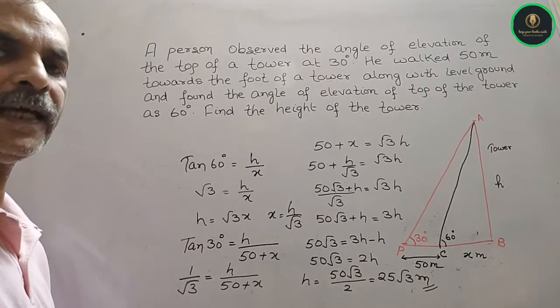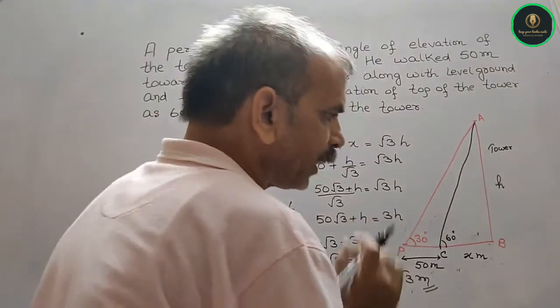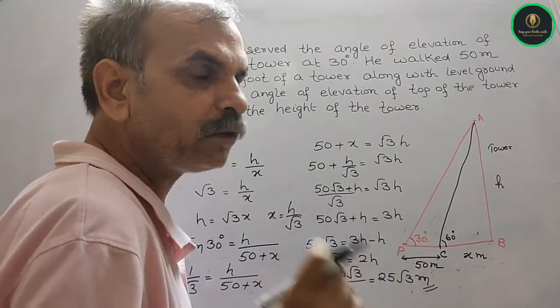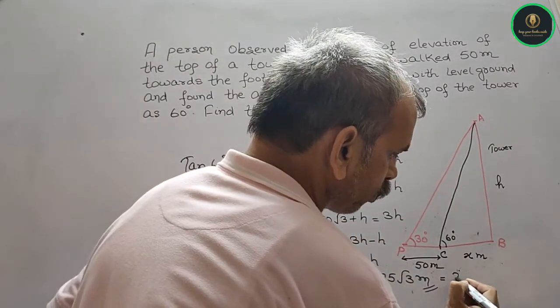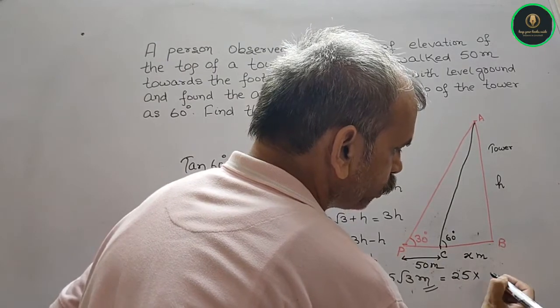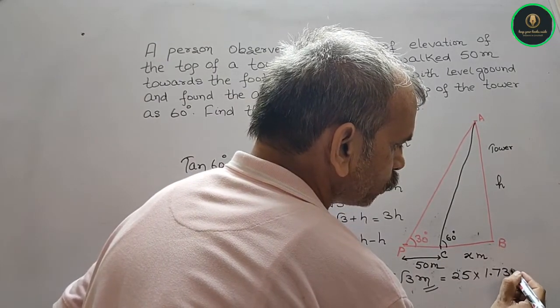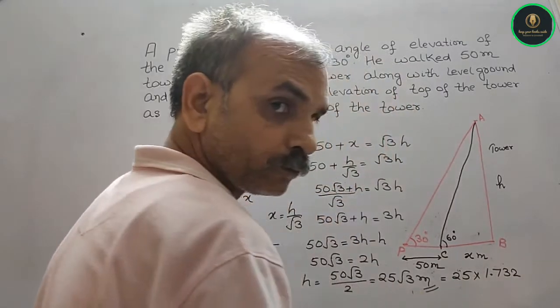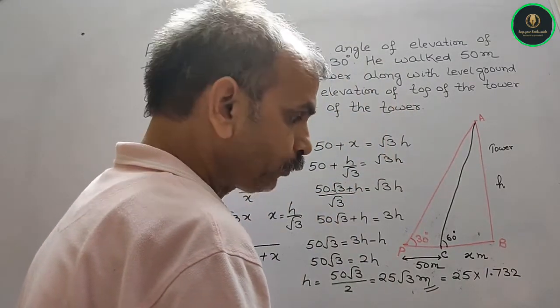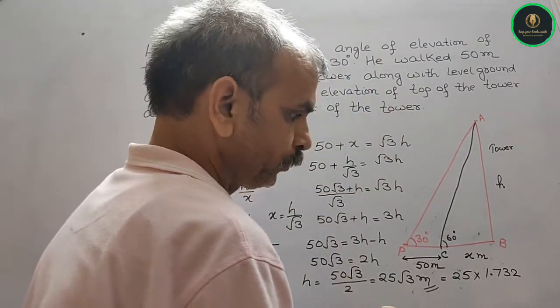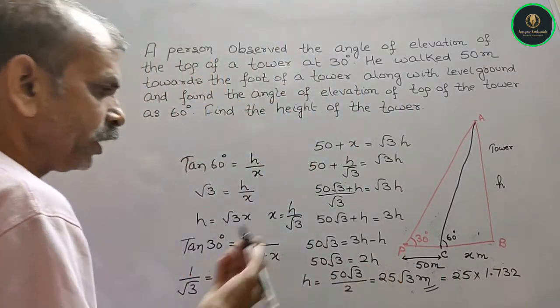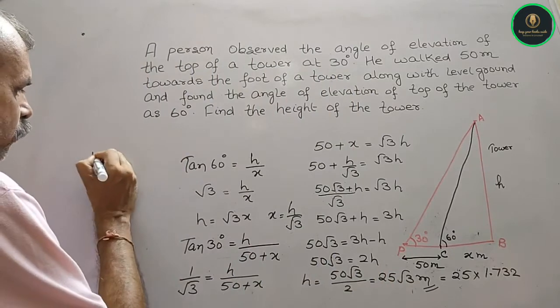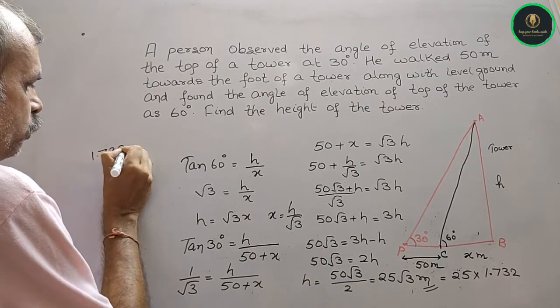Now we know that √3 is 1.732. So now you have 25√3 into 1.732. Let's calculate: 1.732 into 25.